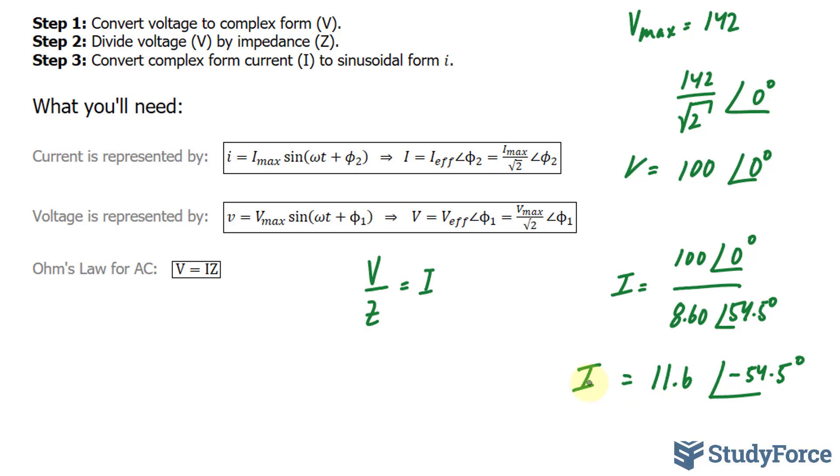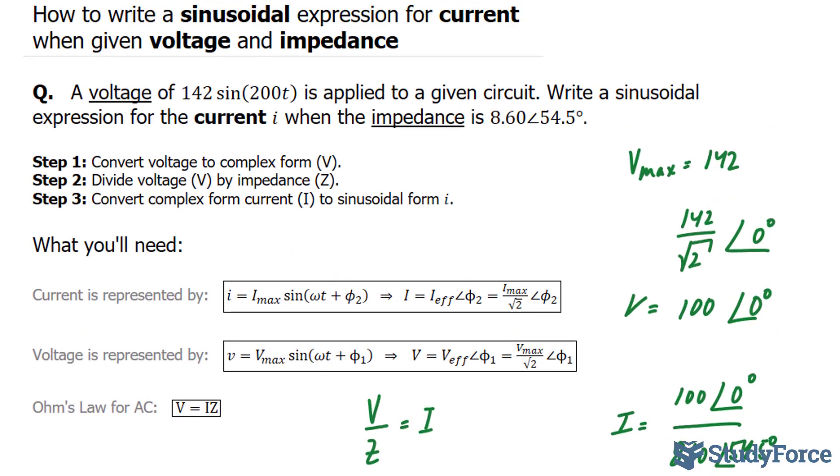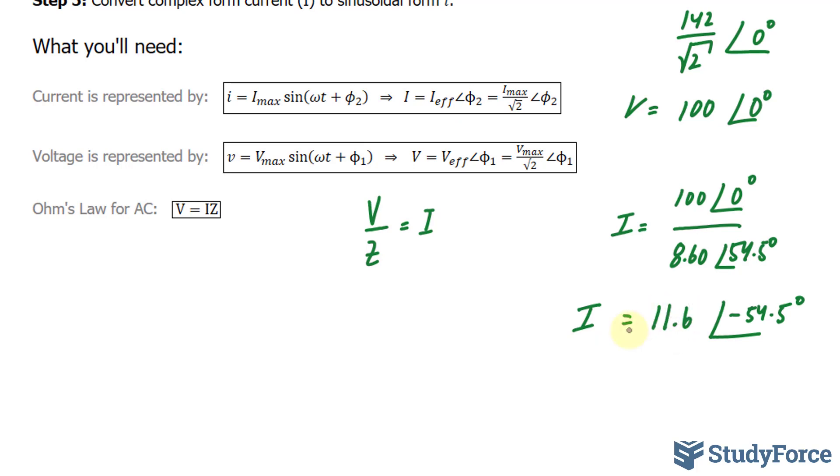The last step is to convert the complex form current to its sinusoidal form, because they specifically ask for a sinusoidal expression. This number, 11.6, represents our effective current.